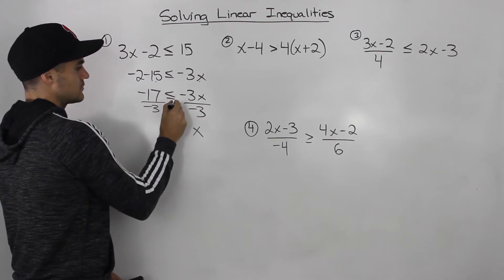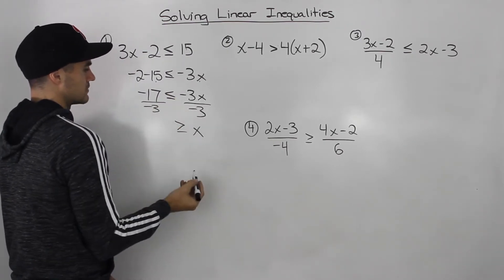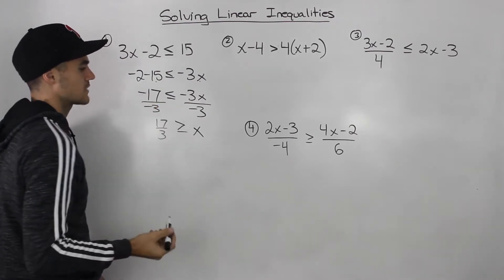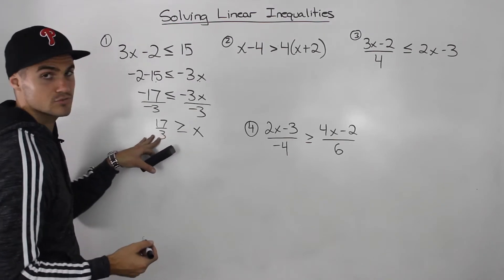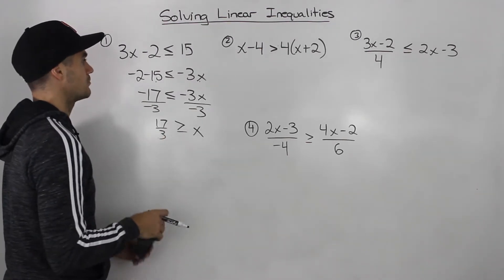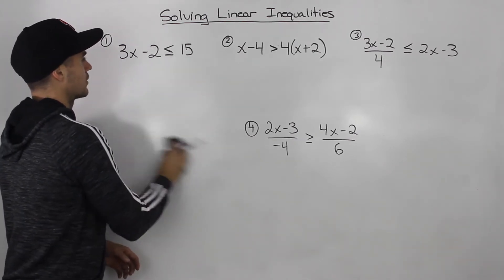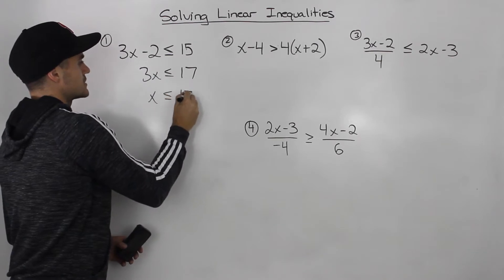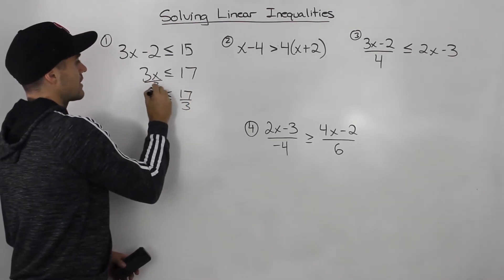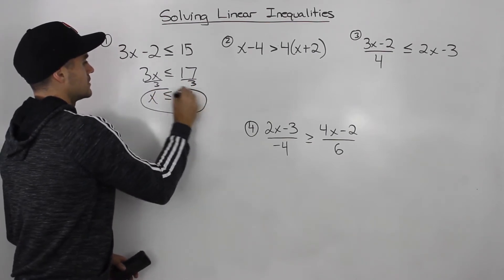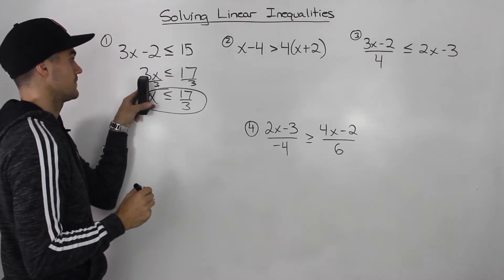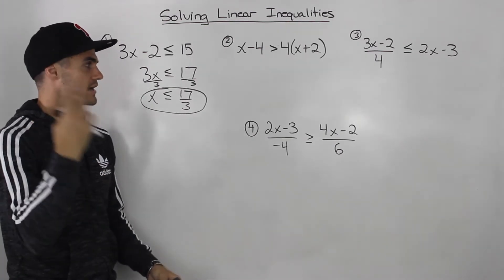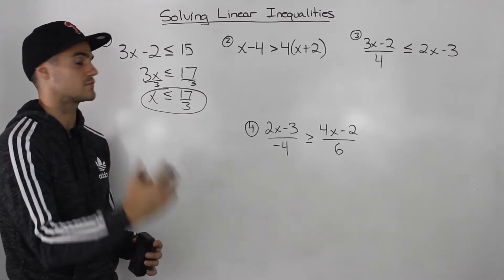So now instead of being a less than or equal to sign, it's going to be a greater than or equal sign. And negative 17 over negative 3 gives us positive 17 over 3, because the negatives cancel out. Notice that x has to be less than or equal to 17 over 3, which is the same answer we got before when we did it the more intuitive way, bringing the negative 2 over. We didn't have to flip the sign at all, because we were dividing by a positive number. So always try to make sure the coefficient in front of the variable is positive.